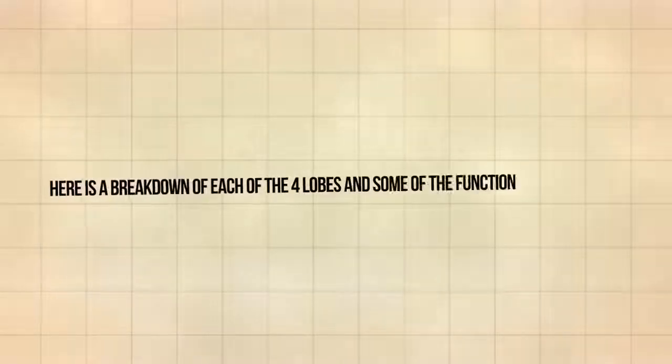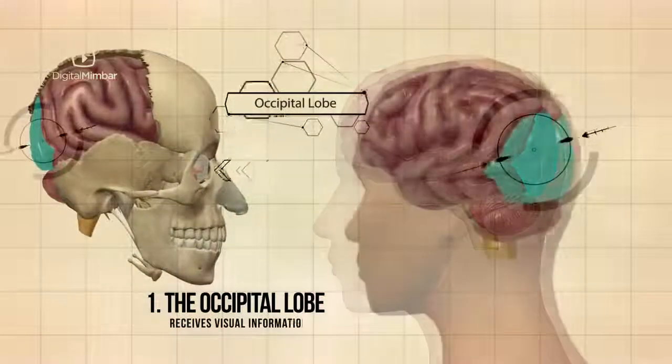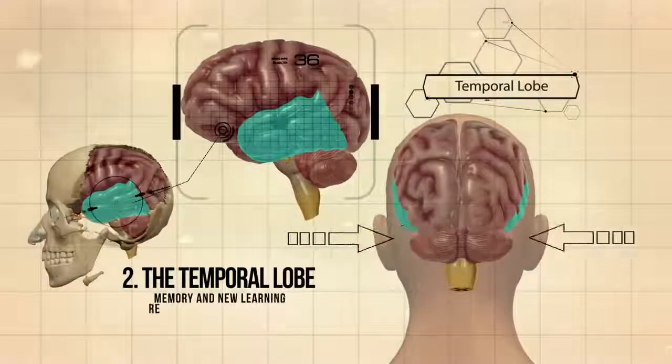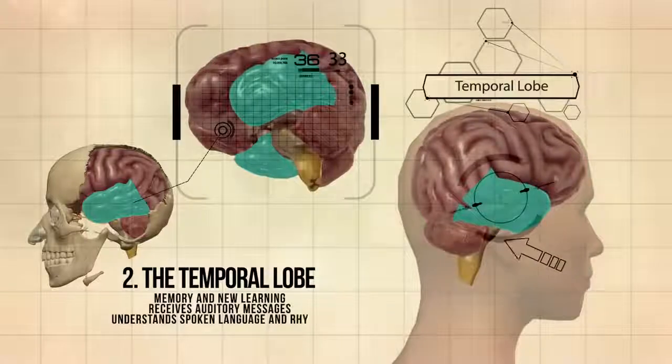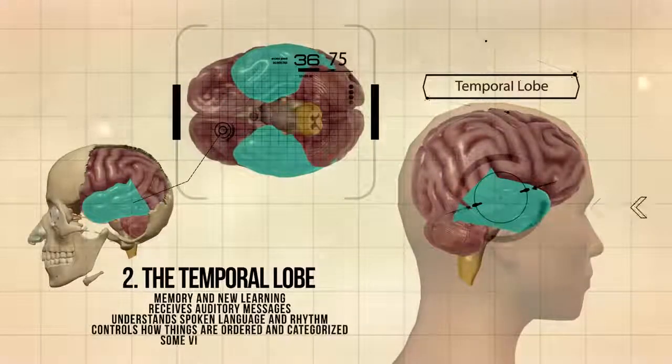Here is a breakdown of each of the four lobes and some of the functions they have. The occipital lobe receives visual information, interprets color, shape, and distance. The temporal lobe is responsible for memory and new learning, receives auditory messages, understands spoken language and rhythm, controls how things are ordered and categorized, some visual perception.